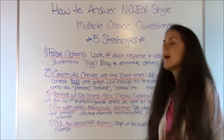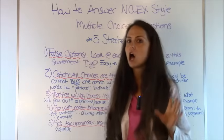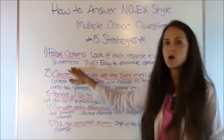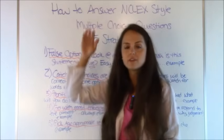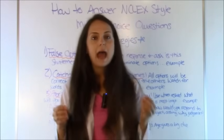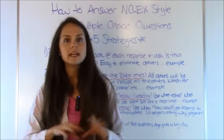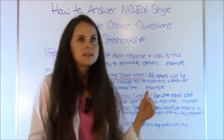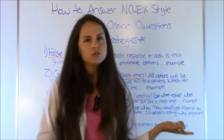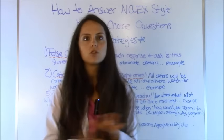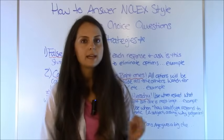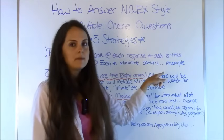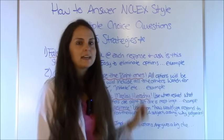Number one: false options. A lot of times each response — A, B, C, or D — is going to be an actual false statement. It's not even true. So what you need to do is look at each statement and ask, is this true or is this false? This is a great way for eliminating wrong options. Let me show you what I mean with a sample question.